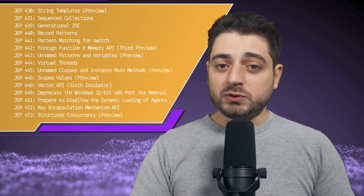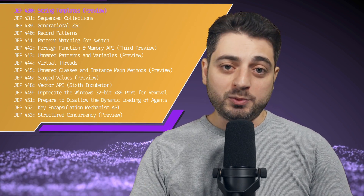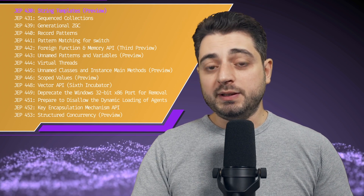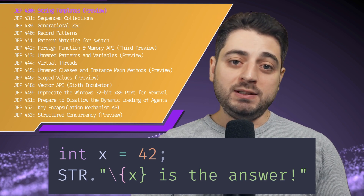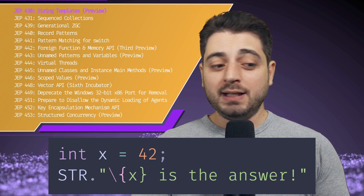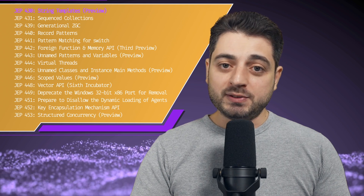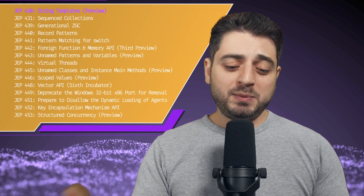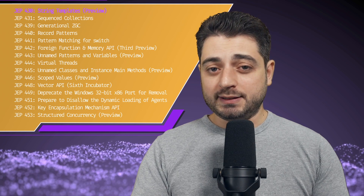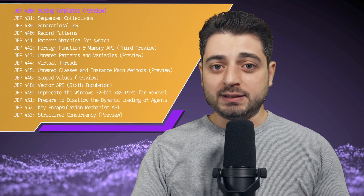The first one on the list is string templates, which is what we call string interpolation in Scala. Similar deal. You get a couple of built-in interpolators, which are called template processors in Java: STR for strings, FMT for printf-style formatting, and others like SQL for instance can be defined in libraries. This is mostly a Scala channel so let's not focus on this one too much, especially since Scala had string interpolation for over 10 years at this point and it's even checked at compile time.